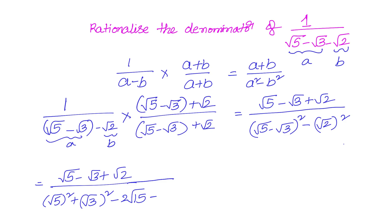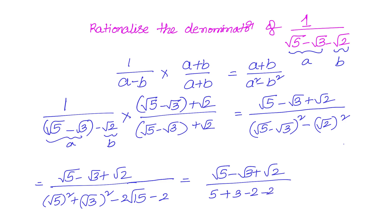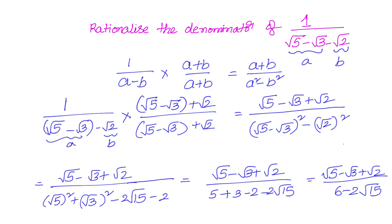Subtracting (√2)² = 2 from that, we get 5 + 3 − 2 − 2√15. So the expression becomes (√5 − √3 + √2) divided by (8 − 2 − 2√15), which is (√5 − √3 + √2) divided by (6 − 2√15). We need to rationalize the denominator one more time.